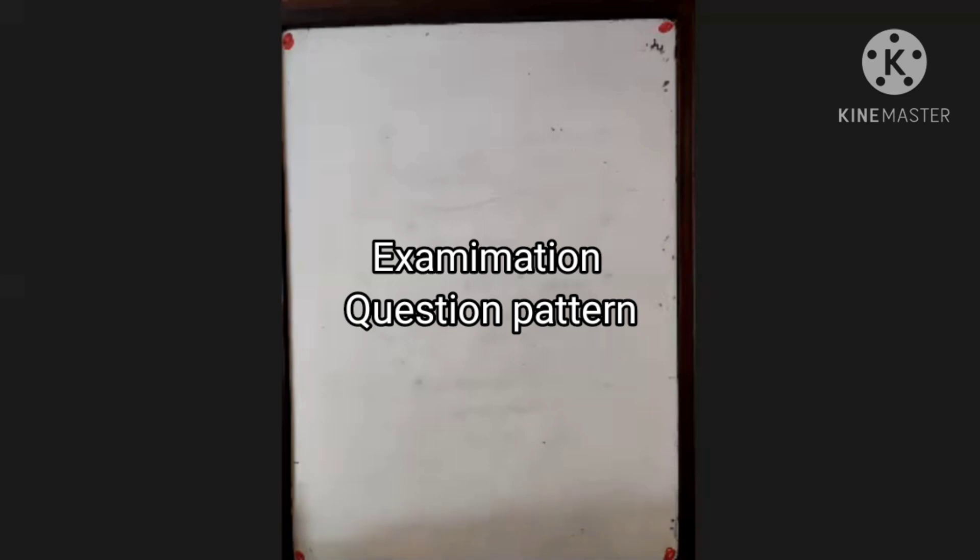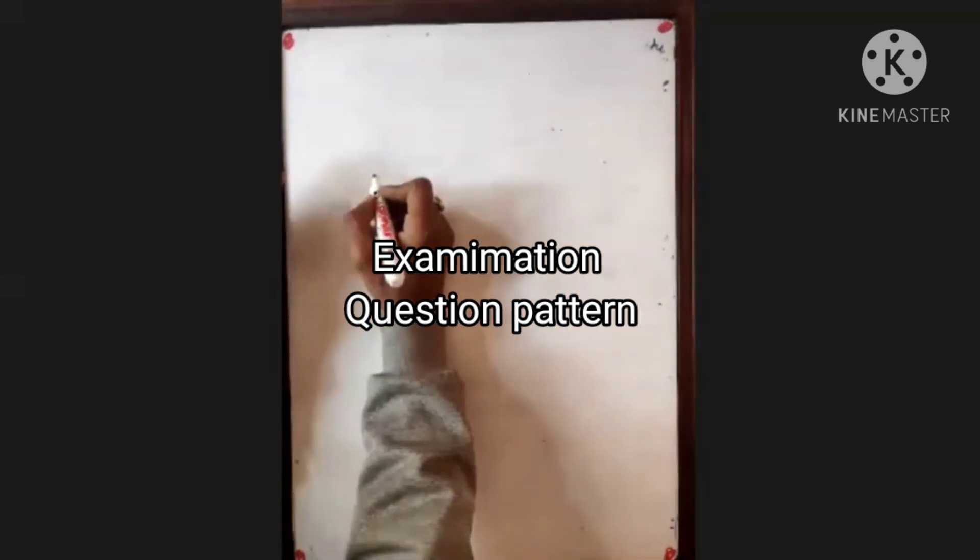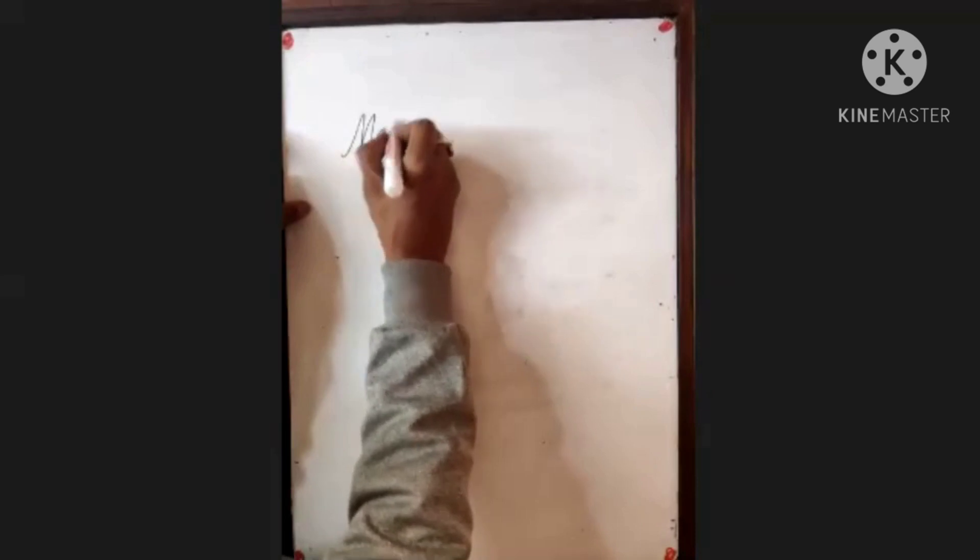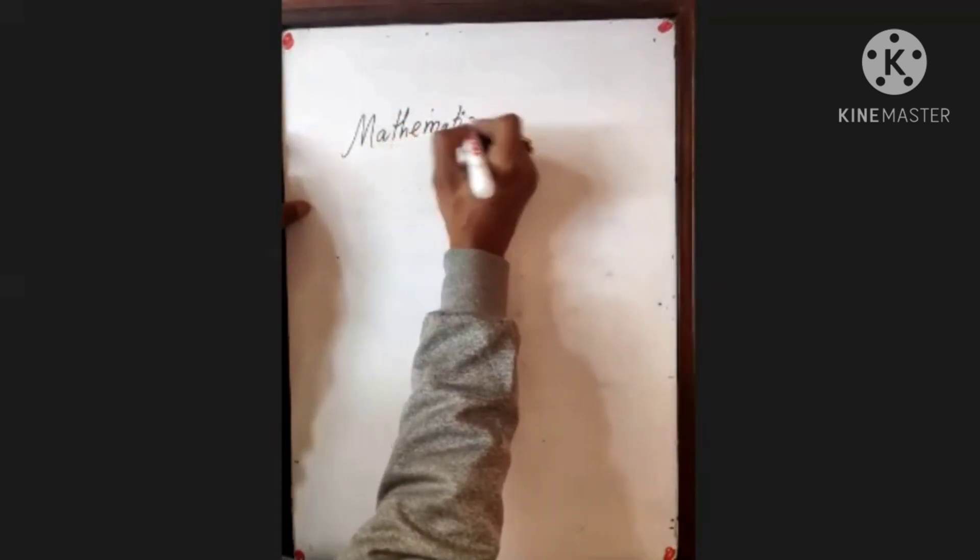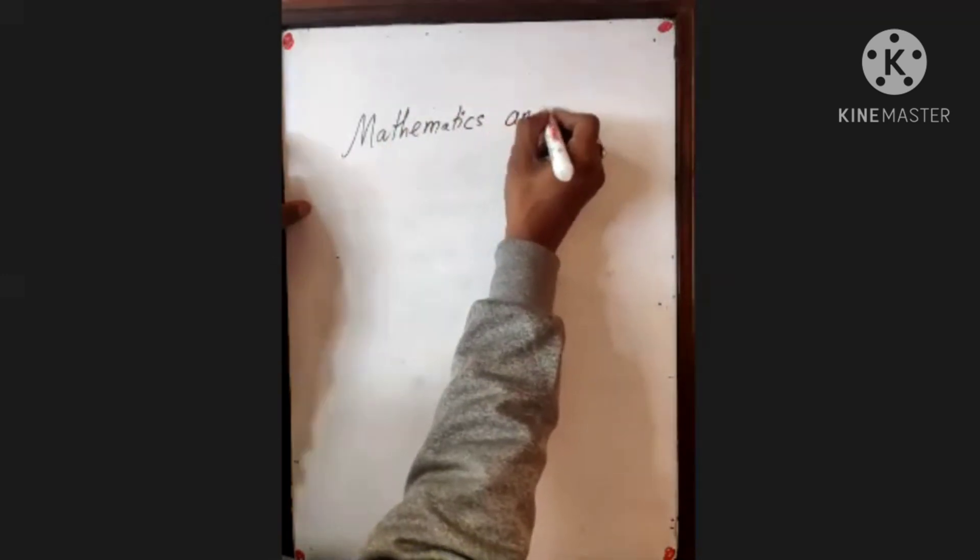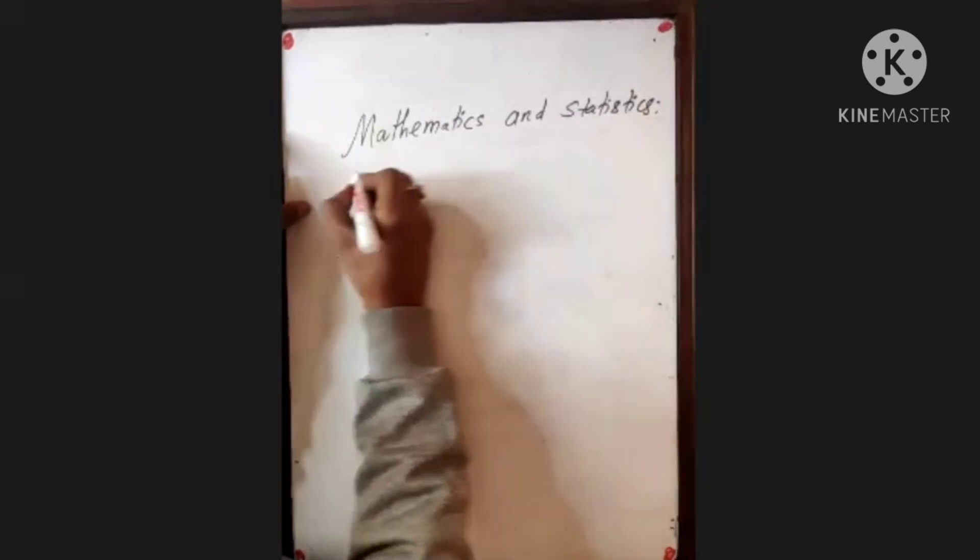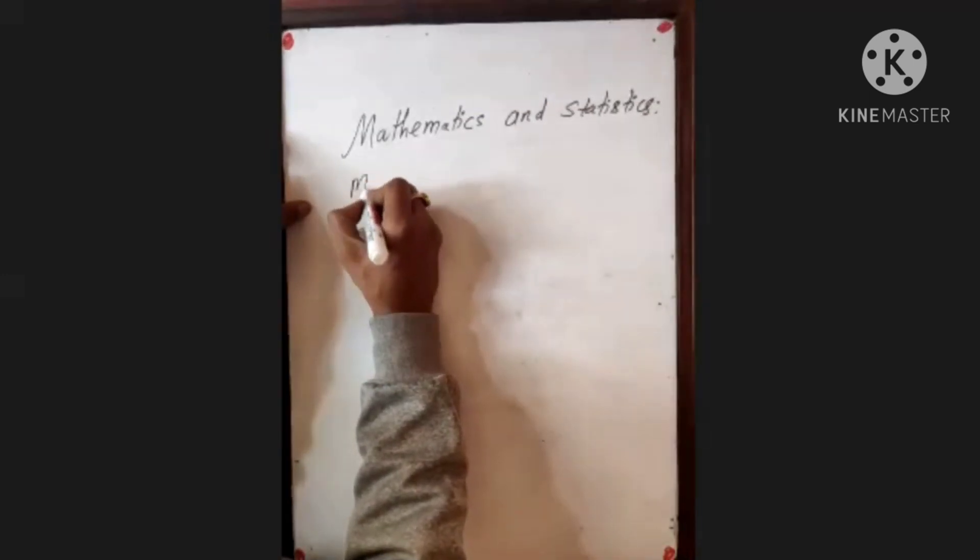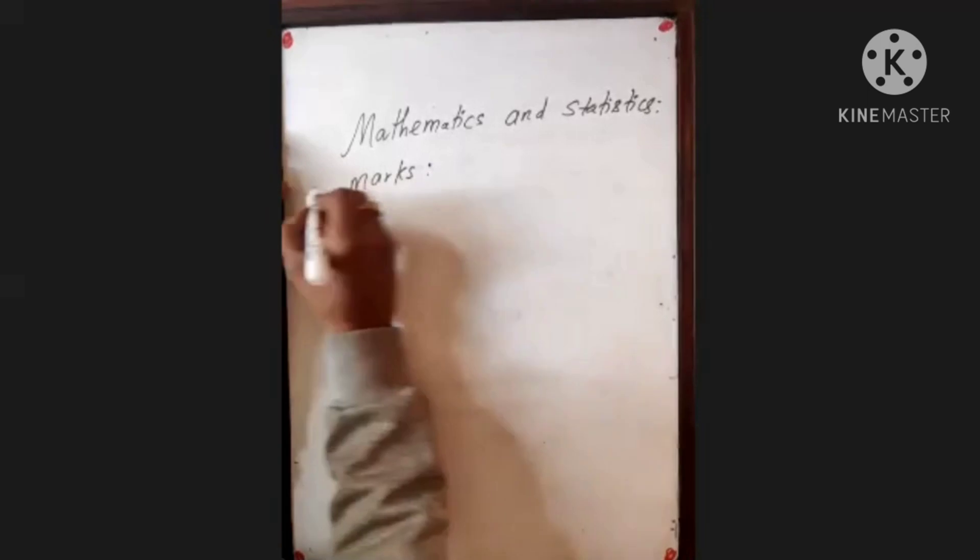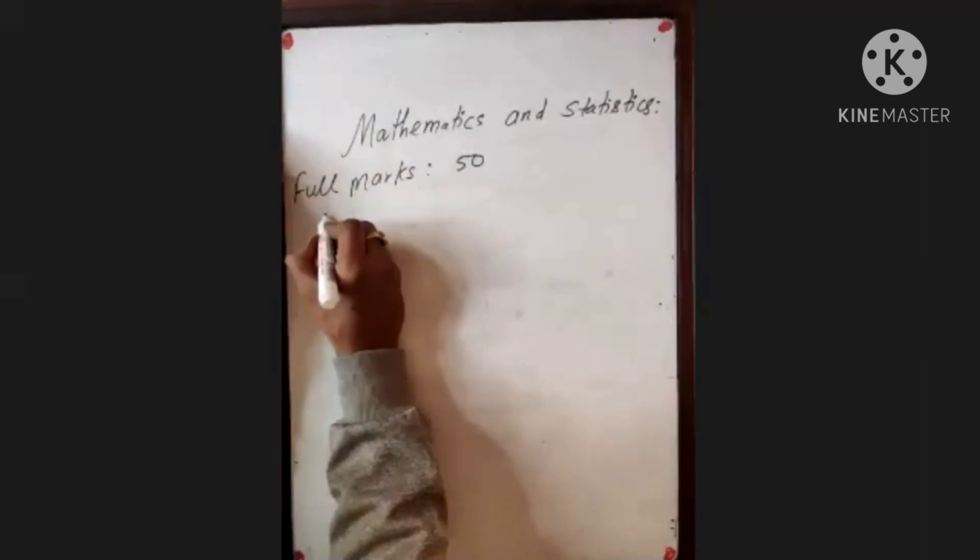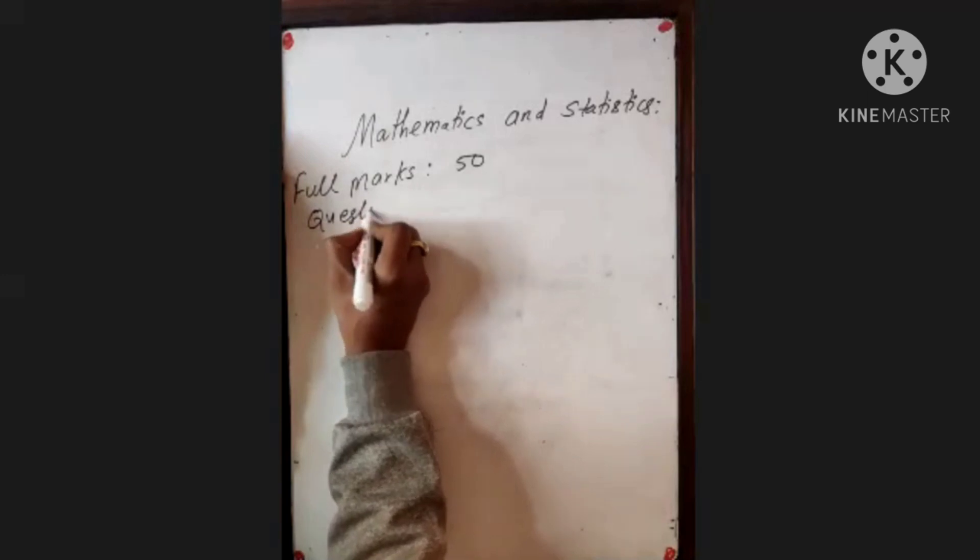So, statistics and mathematics combined, mathematics and statistics is a 50 marks subject. The total full marks is 50. Now let's discuss the question pattern.